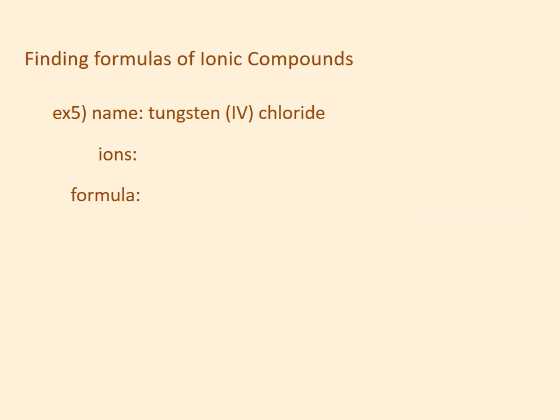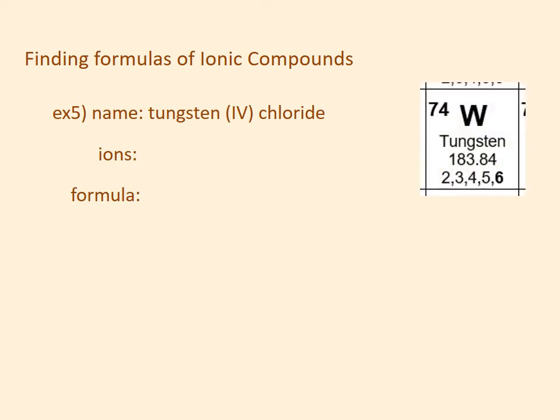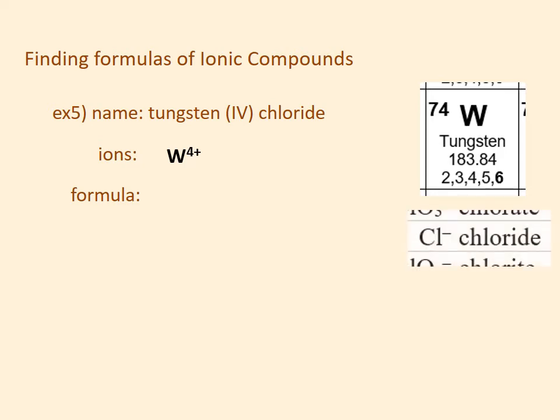Example 5: tungsten(IV) chloride. I look up tungsten on the periodic table and see that the symbol is W. I know it's taking the plus 4 charge because the name has a 4 in Roman numerals. I look up chloride on the negative ions list — that's Cl minus. The lowest common multiple of 4 and 1 is 4. So to get a plus 4 on the front I need 1 W, and to get a minus 4 on the back I need 4 Cls.